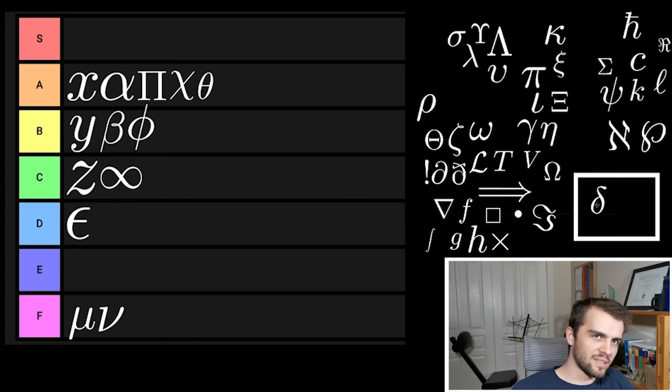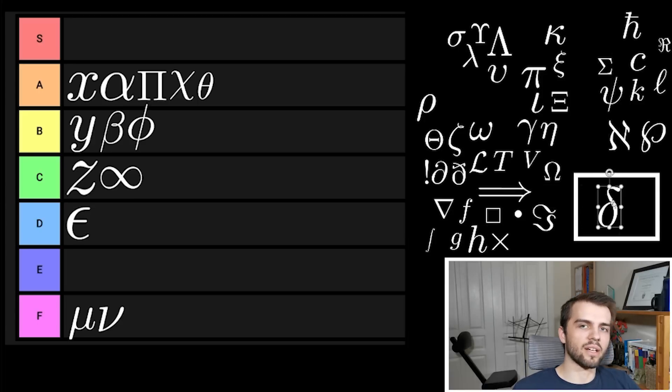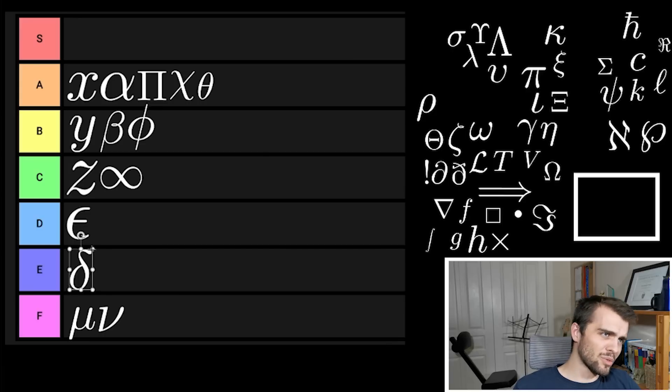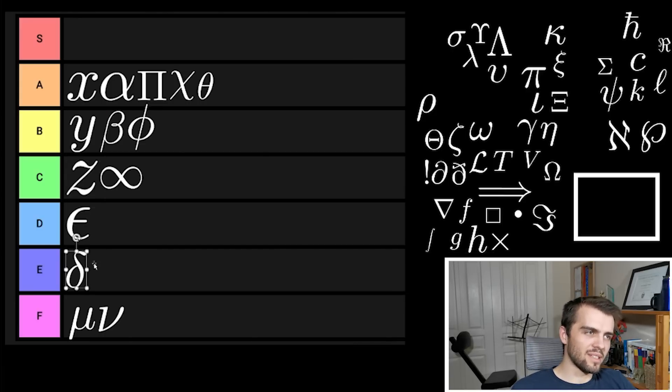Alright, delta. Delta is kind of similar. Delta also shows up when you're confused and equations are bad and then they're like okay now delta and we're going to do something weird that you've never seen before. E tier. It's kind of a cool symbol but it just shows up at the wrong times. You show up at the wrong times, you get put in E category.